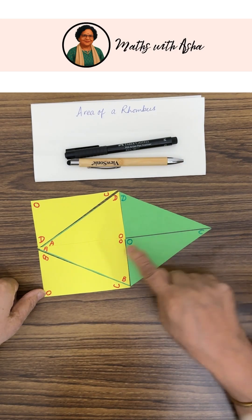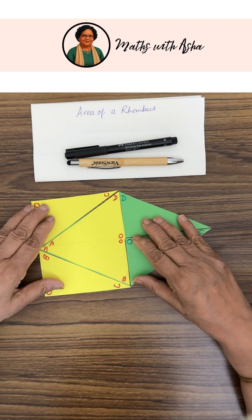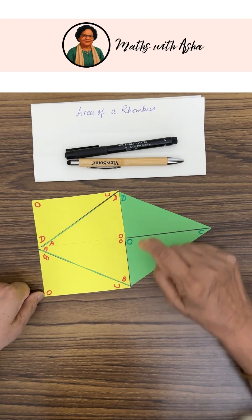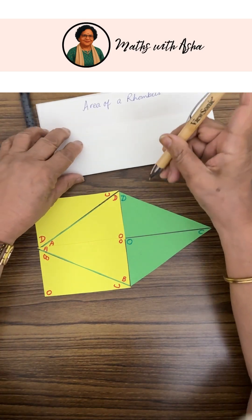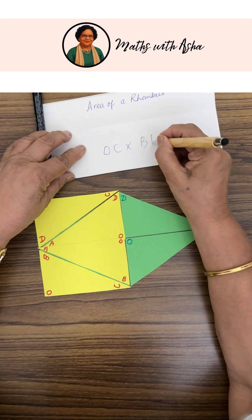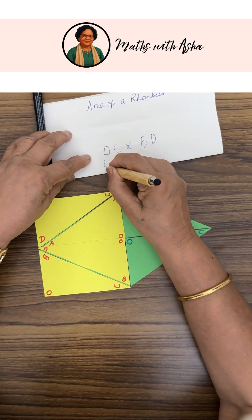The area of this rectangle is nothing but OC into BD. This is what it is, OC into BD, and OC is nothing but half of one diagonal.